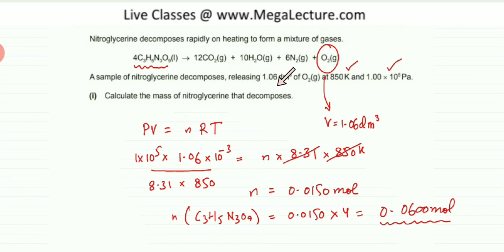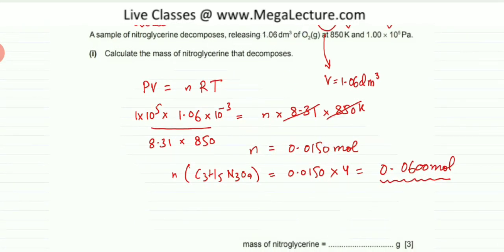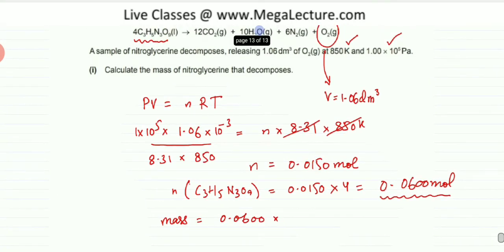And we are basically being asked to find the mass, not the moles. So mass would be, I am going to multiply it by the MR. Mass would be moles, 0.0600 multiplied by the MR. Now what's the formula?